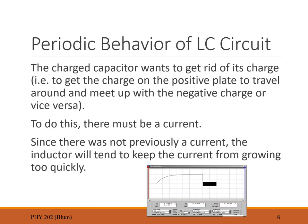Now let us try to understand why the behavior of an LC circuit is periodic. During the RC portion, we charged up the capacitor. Now with the switch flipped, we have a charged capacitor and no battery. The capacitor wants to get rid of those charges — the positive charges on one plate repel each other and would like to get together with the negative charges on the other plate.